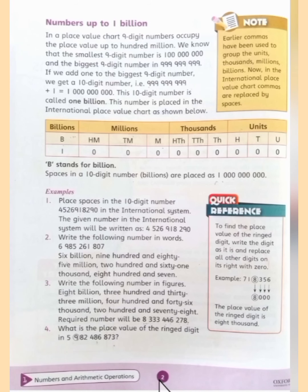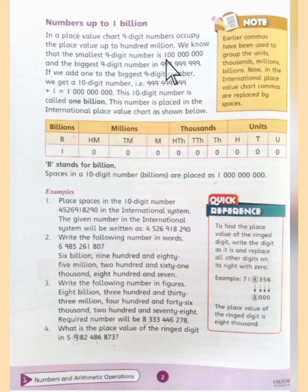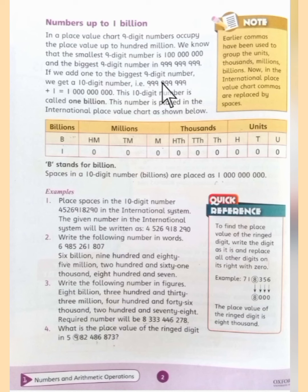In class 4, on page number 2, you have numbers up to 1 billion. In a place value chart, 9-digit numbers occupy the place value up to 100 million. We know that the smallest 9-digit number is 100 million, and the biggest 9-digit number is 999,999,999. If we add 1 to the biggest 9-digit number, we get a 10-digit number. For example, 999,999,999 plus 1 equals 1 billion. This is called 1 billion.